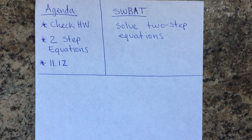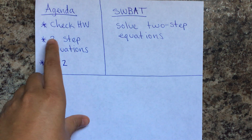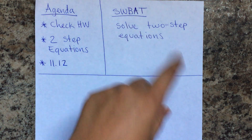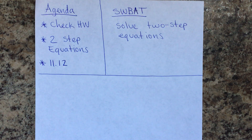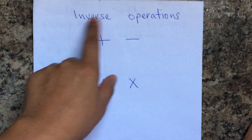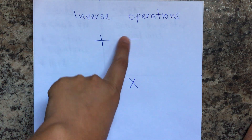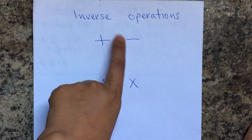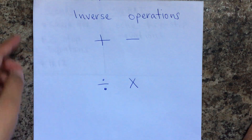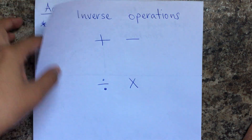Hello students, today's agenda is to check homework and learn about two-step equations. Students will be able to solve two-step equations. From previous lessons, you've seen that inverse operations cancel each other: addition and subtraction are inverse operations, and division and multiplication are inverse operations.